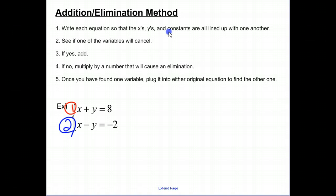Secondly, I need to see if one of the variables will cancel. So if I look to add this up, will one of my variables cancel? And the answer is yes. The Y's will go away. If I add plus Y plus a negative Y, they cancel. So I can just go ahead and add. I don't need to go to step four because I cancel on my own. So if I go ahead and add these, X plus X gives me a 2X. Y plus negative Y, those cancel each other out. And then I'm going to equal 8 plus negative 2, which is 6.